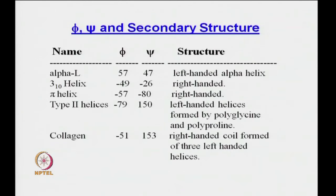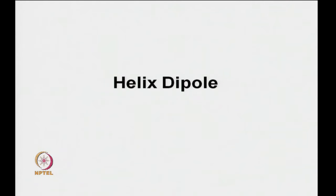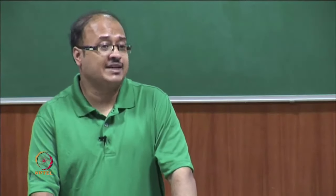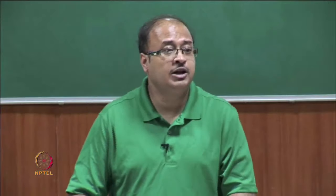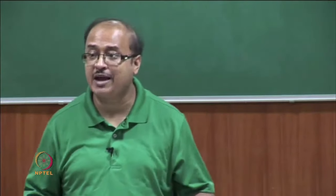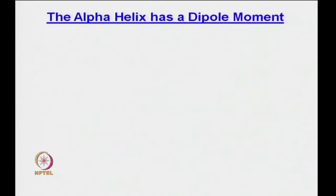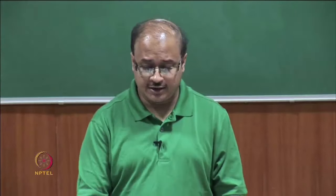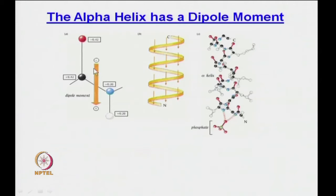An important feature of helical segments is a dipole commonly referred to as the helix dipole, helical dipole, or helix macro dipole. The alpha helix has a dipole moment. Looking at the peptide bond and the alpha helical secondary structure, the C terminus is negatively charged and the N terminus is positively charged. All the dipoles of peptide units are aligned along the helical axis, creating an overall dipole moment in the alpha helix. A phosphate group can interact favorably with the positively charged N terminus.